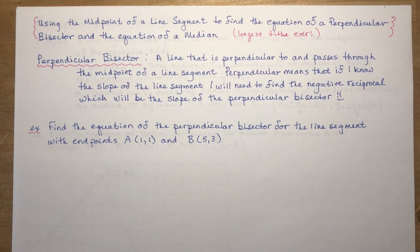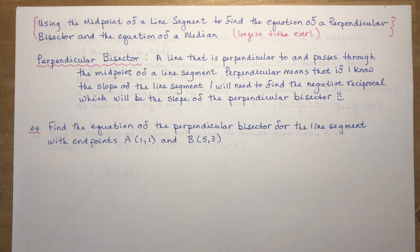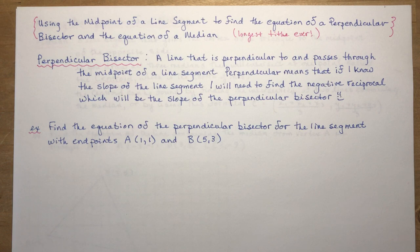Using the midpoint of a line segment to find the equation of a perpendicular bisector and the equation of a line passing through a median. It's the longest title ever. Yesterday we did the midpoint of a line segment, which is just add the x's up, divide by 2, add the y's up, divide by 2, and that gives you your coordinates for the midpoint.